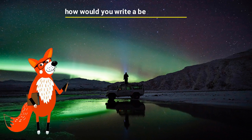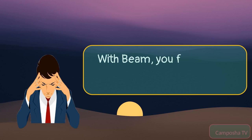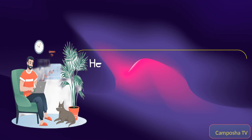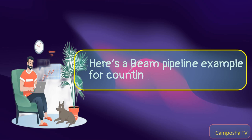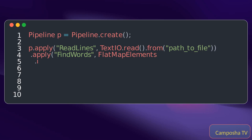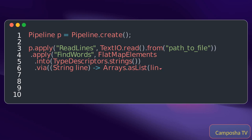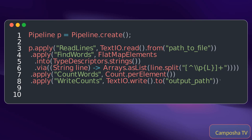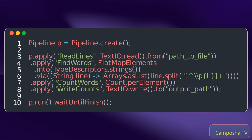How would you write a Beam pipeline? With Beam, you focus on the pipeline's logic rather than the execution details. Here's a Beam pipeline example for counting words. Beam pipelines are portable and can run on any supported backend without needing to rewrite the code.